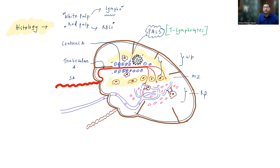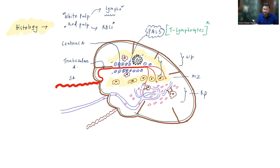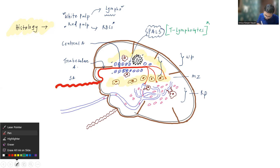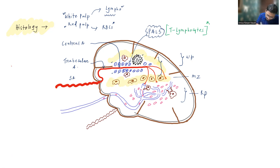If you remember the structure of lymph nodes, T lymphocytes are present in the paracortex. Inside the spleen, the T lymphocytes are present in the peri-arteriolar lymphoid sheath. If you take a cross-section at this level, you can find the central artery in the center, surrounded by the lymphoid sheath of T lymphocytes.